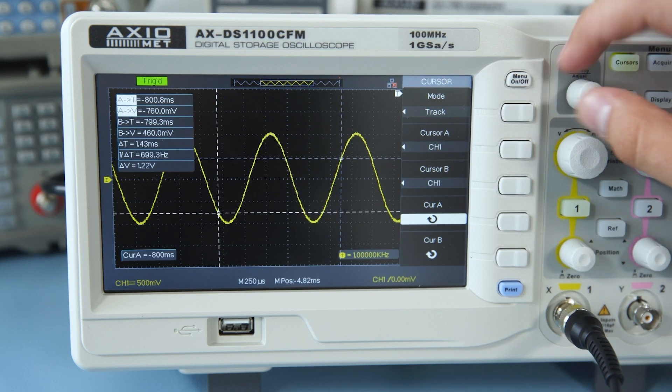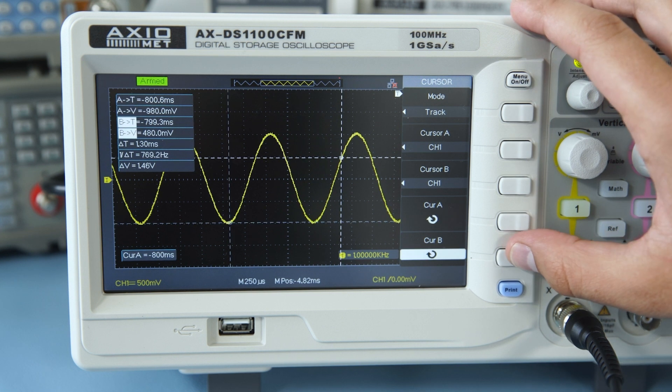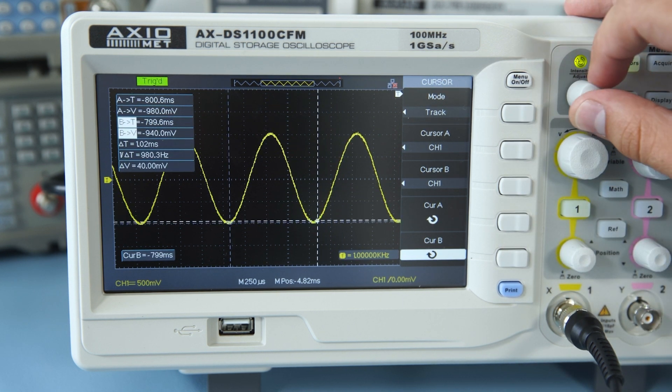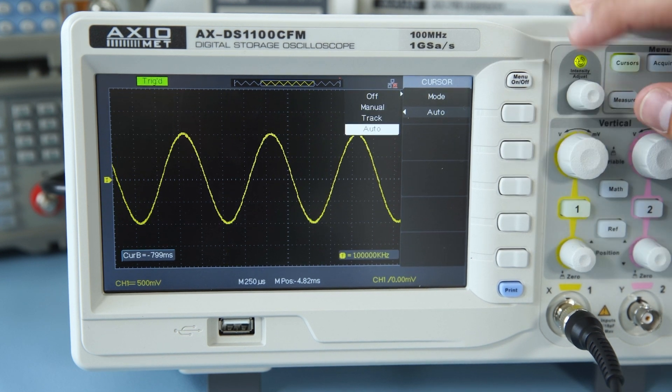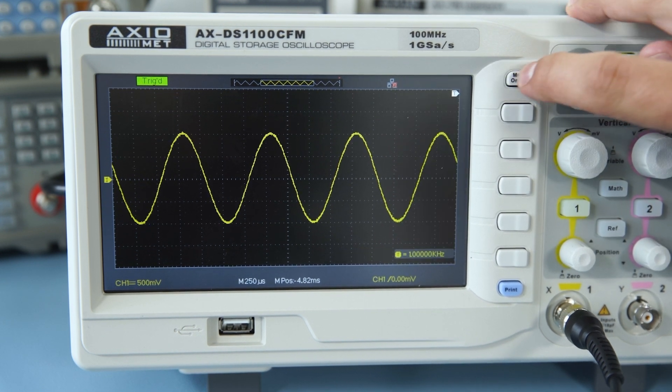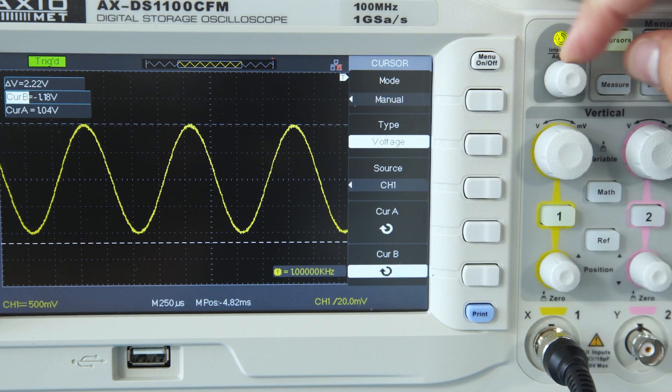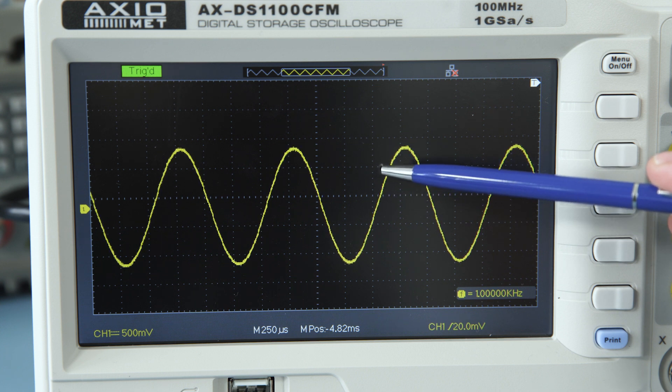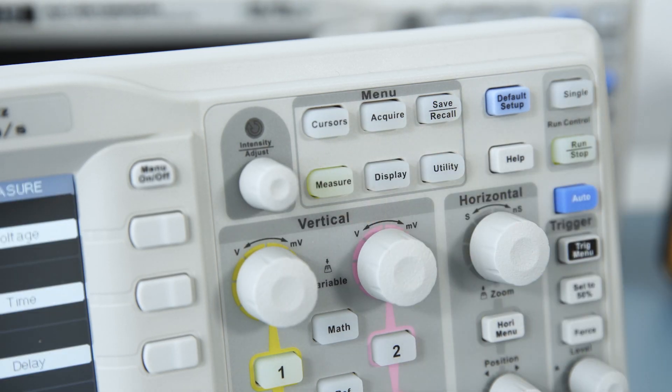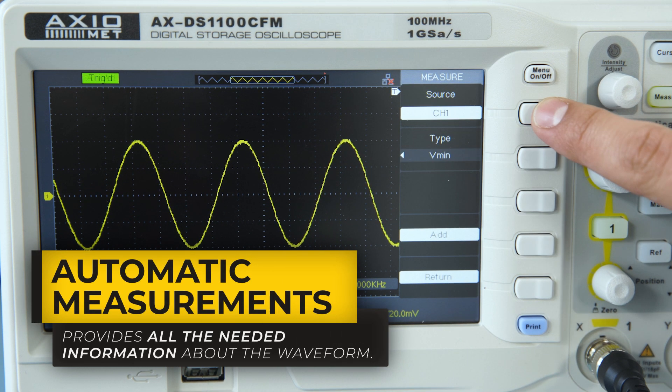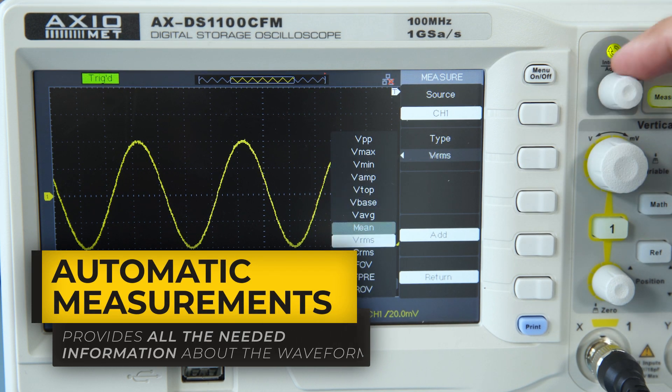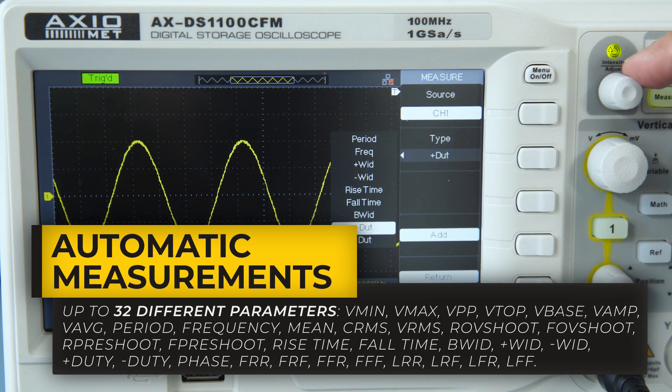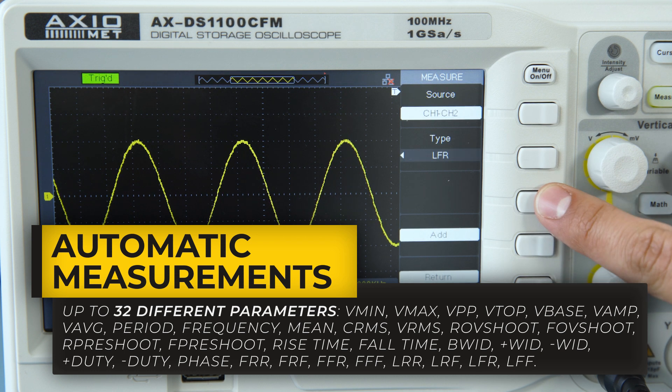Instead of adjusting the Cursors, making measurements, and counting the divisions on vertical and horizontal scale, one can easily get all the needed information about the waveform using the automatic measurements. Axiomet Oscilloscope can measure up to 32 different parameters by entering the individual menus or even display all the 32 measurements at once.